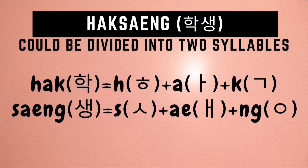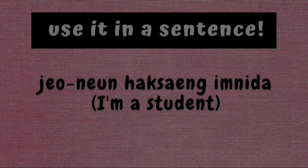How do you write hakseng in Hangul? It is composed of two syllables. For the first syllable, hak, we need to draw first a hyuk character, followed by an a character, followed by a geok character. For the second syllable, seng, we need to draw first a siot character, followed by an e character, followed by an iang character. And that's how you write hakseng in Hangul.